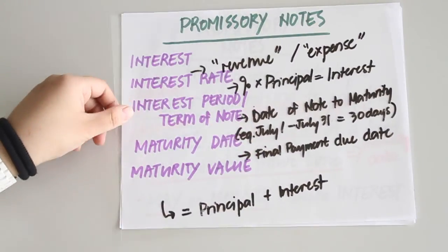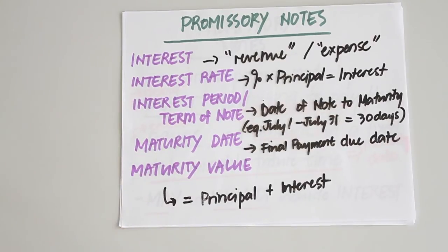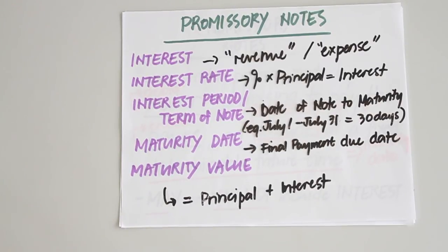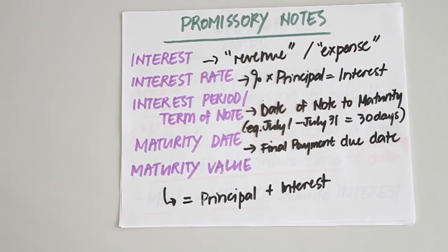Interest is basically either a revenue or an expense depending on your point of view. If you are the maker, then interest is a form of expense. However, if you are the payee or the creditor, the interest serves as a form of revenue. The interest rate is the percentage multiplied to the principal to get the interest.